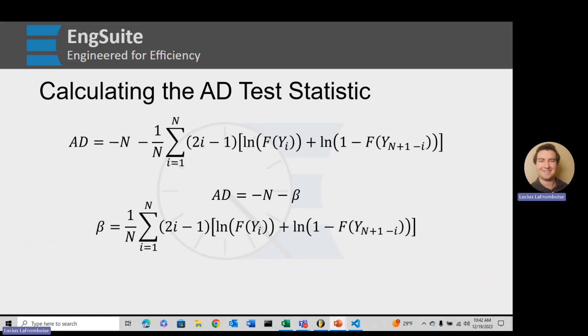Plus the natural log of 1 minus the cumulative distribution function of Y, of the ith reverse order. It'll make a little more sense in a second, but Y of N plus 1 minus I is the ith index, the ith value if you were to flip them in descending order. YI in ascending, Y of N plus 1 minus I descending.